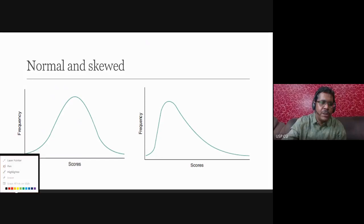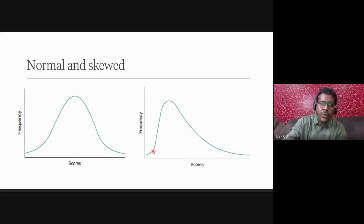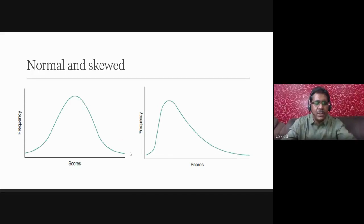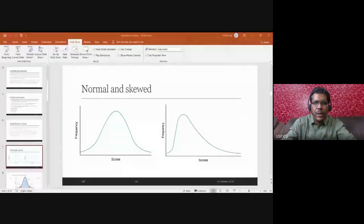The curve on the right is skewed because the higher scores are present in greater frequency. This is skewed towards the left. We could have a right-skewed distribution as well. We can measure skewness, but you can understand just from the diagram that one distribution is skewed and the other is not.